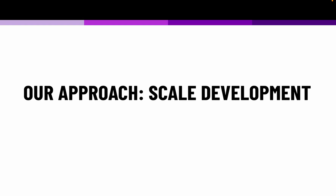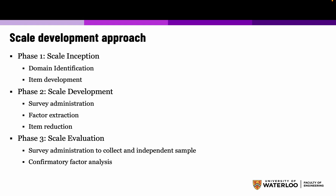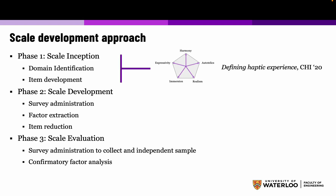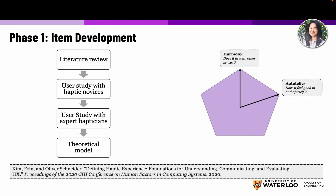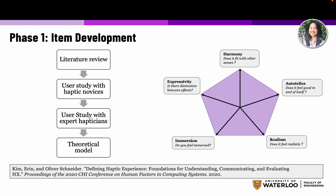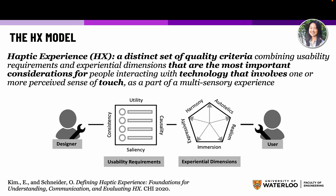Our approach is to use the process of scale development, a methodology used in social sciences to develop validated scales and to understand a phenomenon of interest. We started this process in a paper presented at CHI 2020 about defining haptic experience. We did a literature review and interacted with both haptic novices and expert hapticians to develop a theoretical model of haptic experience. The main five dimensions found were: harmony (does it fit with other senses?), autotelics (does it feel good in and of itself?), realism (does it feel realistic?), immersion (do you feel immersed?), and expressivity (is there a distinction between effects?). We also defined haptic experience as a distinct set of quality criteria that are the most important considerations for technology involving the sense of touch.